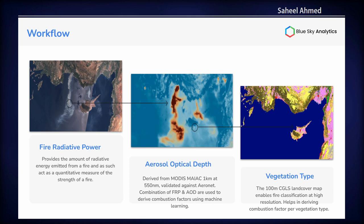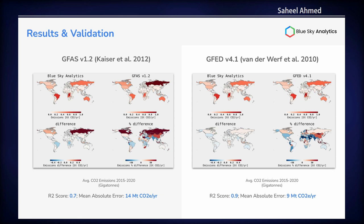These are the three core products that go into the model. FRP tells the amount of radiative power. Aerosol tells us the amount of particulate matter concentration. We further validated our aerosol values with a ground network of AERONET sensors at 550 nanometers, and the vegetation type accurately classifies the fuel type that is being burned. We further validated our study with different existing independent studies — two of those are GFAS and GFED. GFAS is primarily based on a top-down approach; GFED is based on a bottom-up approach. On first look, it finds a good agreement between our estimates and the validation set, although we do see some extreme bias especially in regions of Russia and Southeast Asia, which we further investigated.